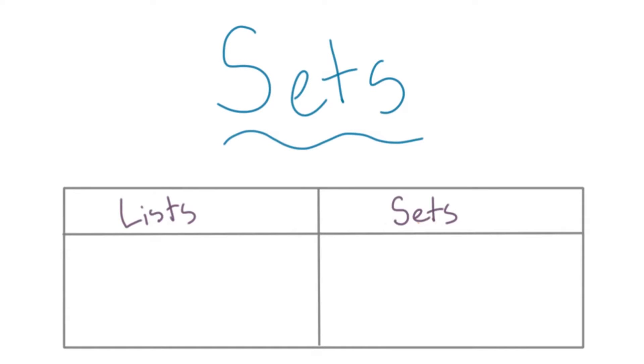A list has some kind of ordering for its elements. A set doesn't have that, but instead doesn't allow for repeated elements.